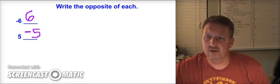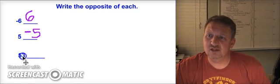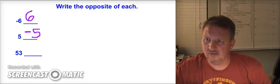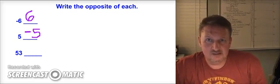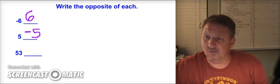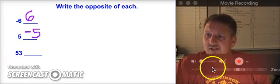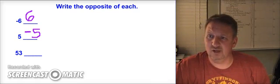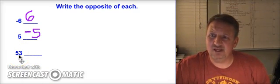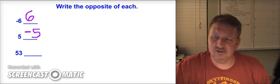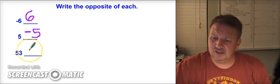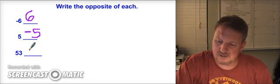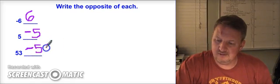This next one is a bit bigger, but it doesn't matter how big the numbers are — they still have an opposite. The number 53 is 53 places to the right of zero on the number line. So its opposite has to be 53 places to the left, and any number to the left of zero is negative, so the opposite of 53 is negative 53.